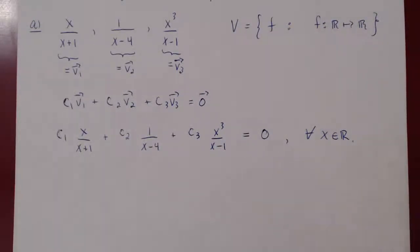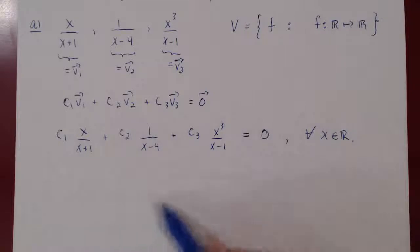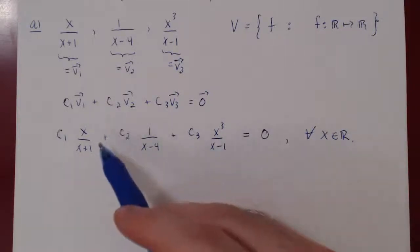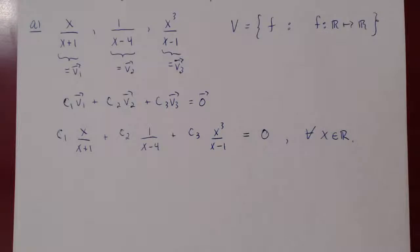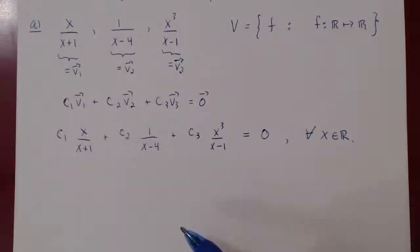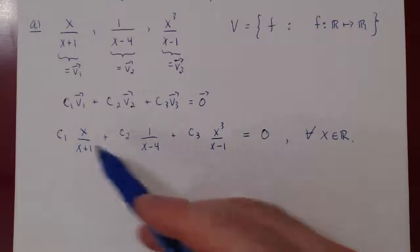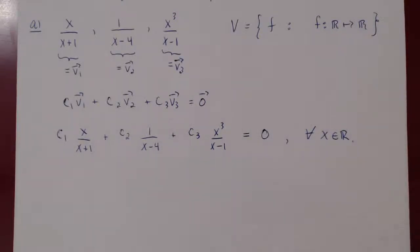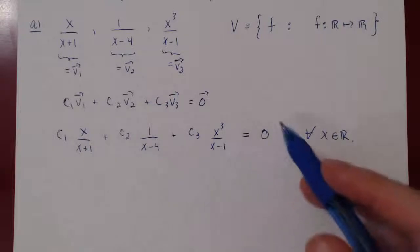We have two options. We could combine this linear combination into a single rational function by putting everything over a common denominator, giving a single fraction equal to zero for all x, which would yield a linear system. But we can do something simpler here, taking advantage of the fact that this equality must hold for all values of x — no matter which value you choose, the equation must always equal zero.